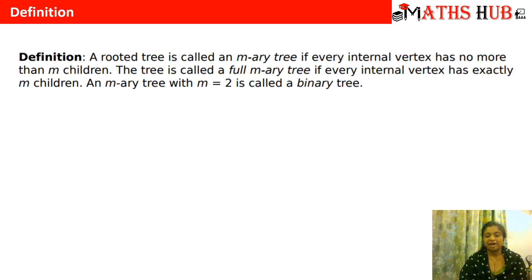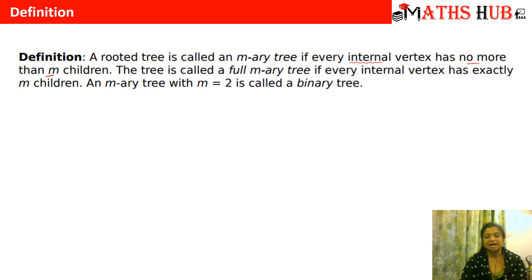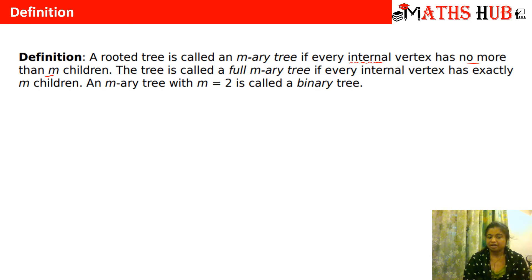A rooted tree is called an m-ary tree if every internal vertex has no more than M children. It is important that it should have at most M children. An internal vertex, as discussed in my last videos, is a vertex which has children. This tree will be called a full m-ary tree if every internal vertex has exactly M children. So it's a simple m-ary tree when it has at most M children, and a full m-ary tree if every internal vertex has exactly M children.